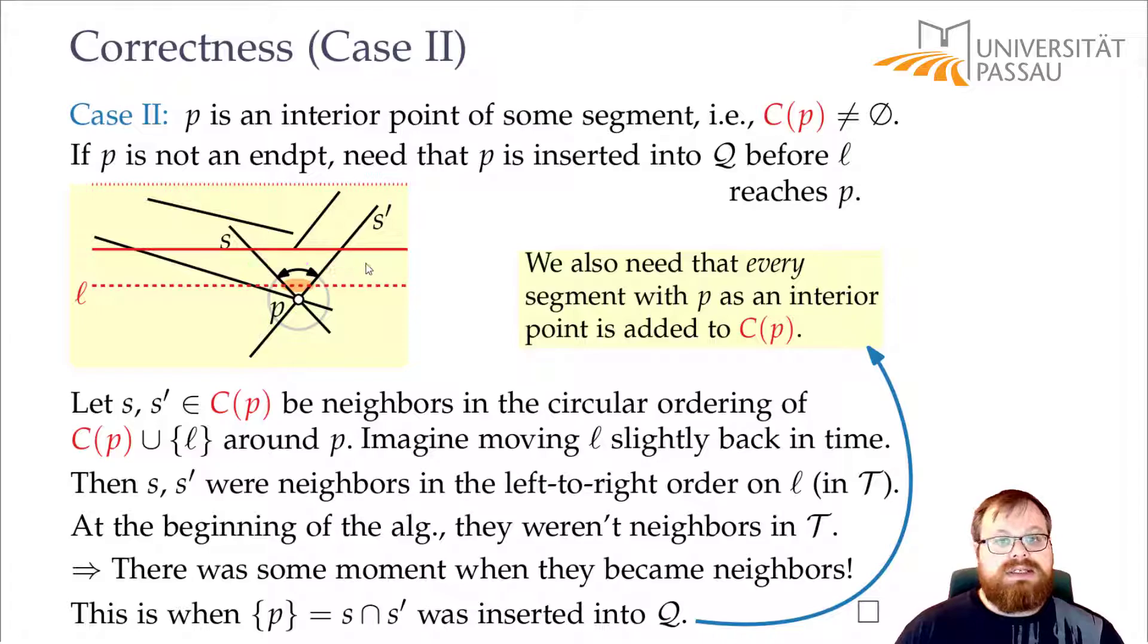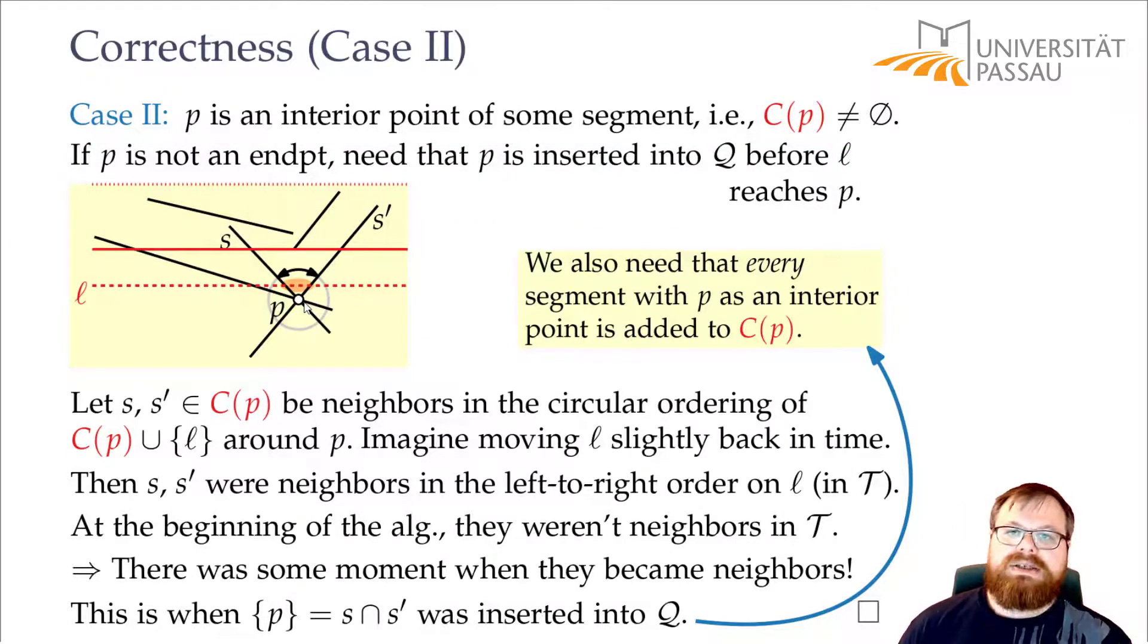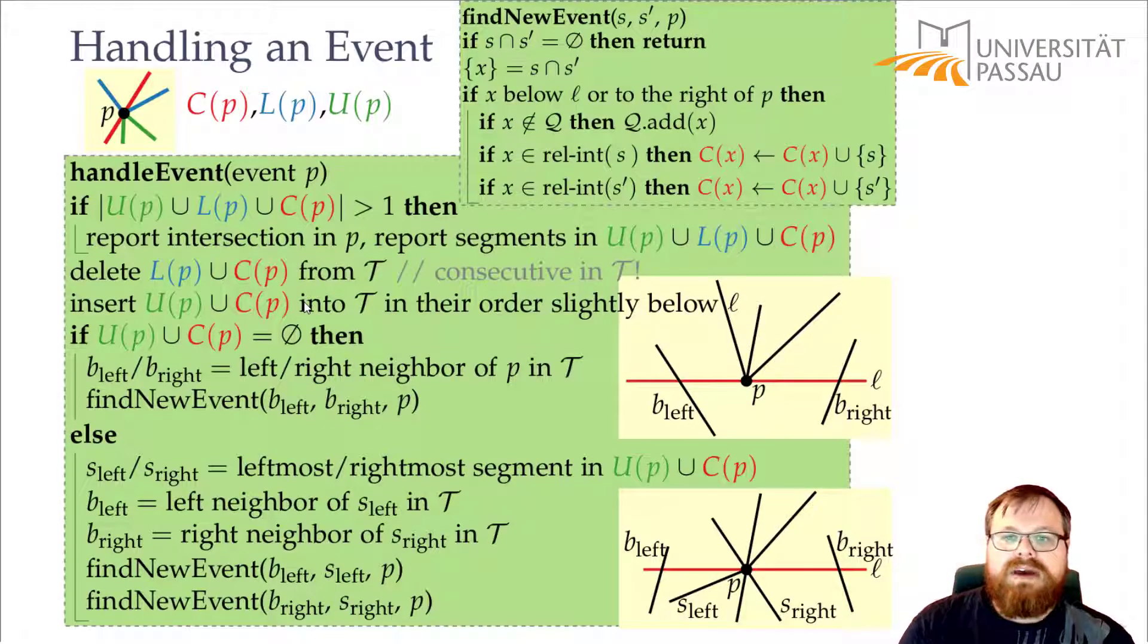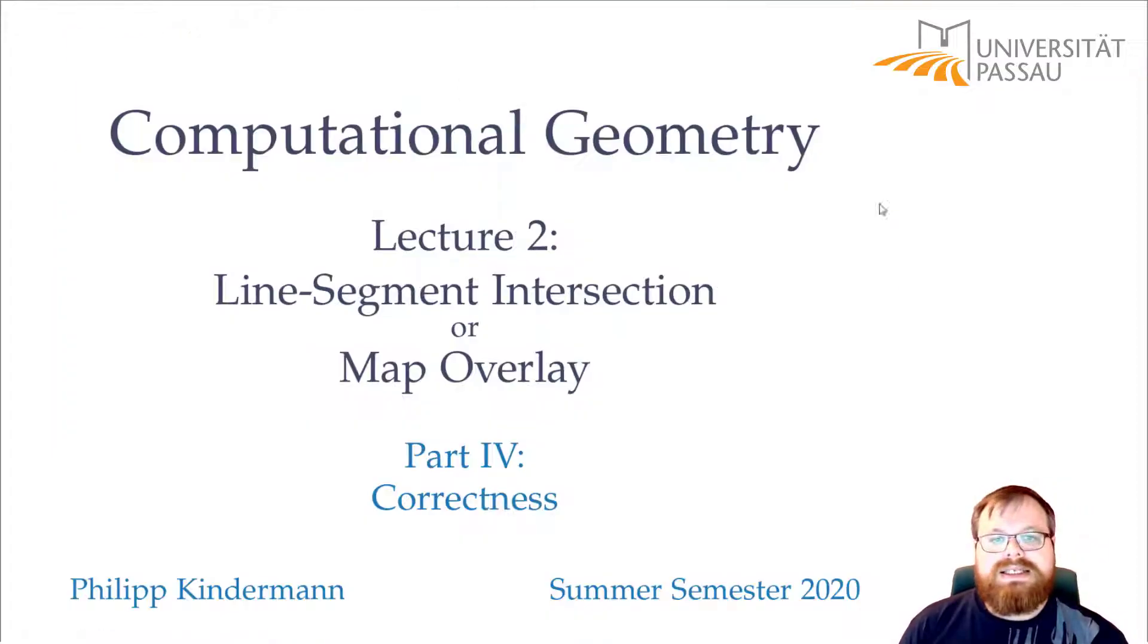So we don't only look at these two together, but also at these two together and we repeat the same argument. That means for all these pairs of neighbors, at some point when they became neighbors, we found P as the new event point. And in that step, if we look back into the step of the algorithm, we also added both of these segments to C(X), or in this case C(P).